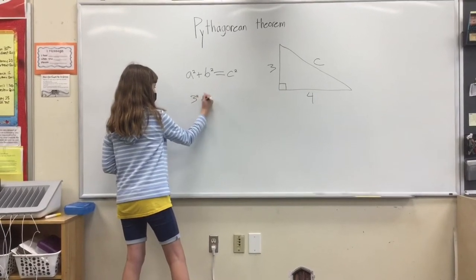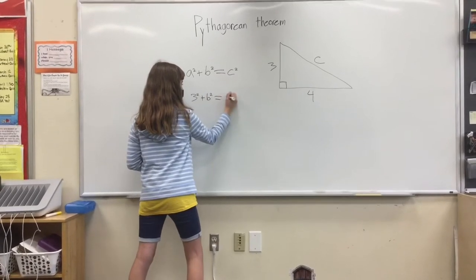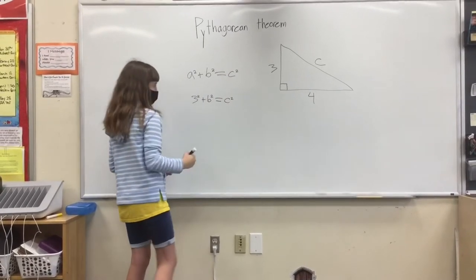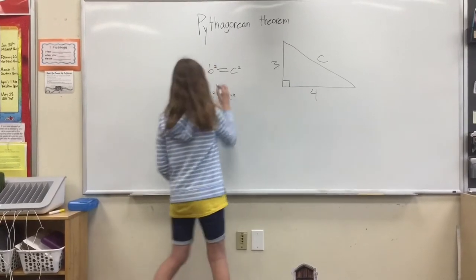3 squared plus b squared equals c squared. And 4 can replace b.